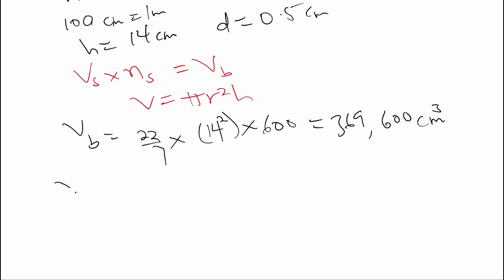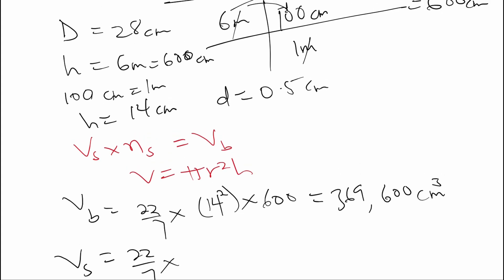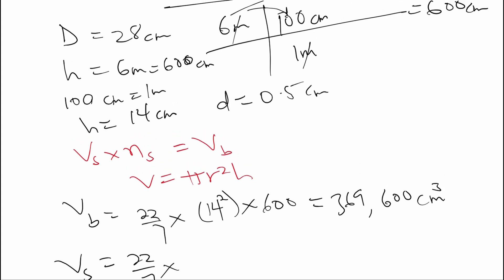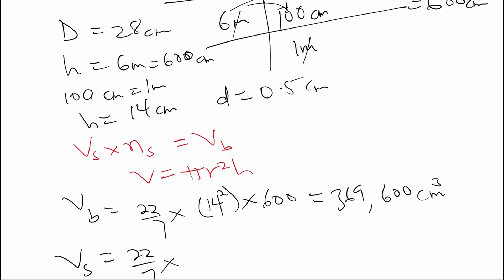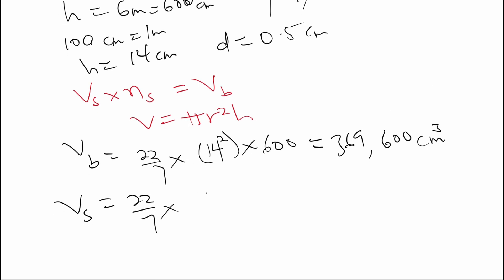The volume of the smaller cylinder equals pi r squared h. Pi is 22 over 7, and r is half the diameter. The diameter of the smaller cylinder is 0.5, so half of 0.5 is 0.25. We have 22 over 7 times 0.25 squared times the height 14, which gives us 2.75 cubic centimeters.